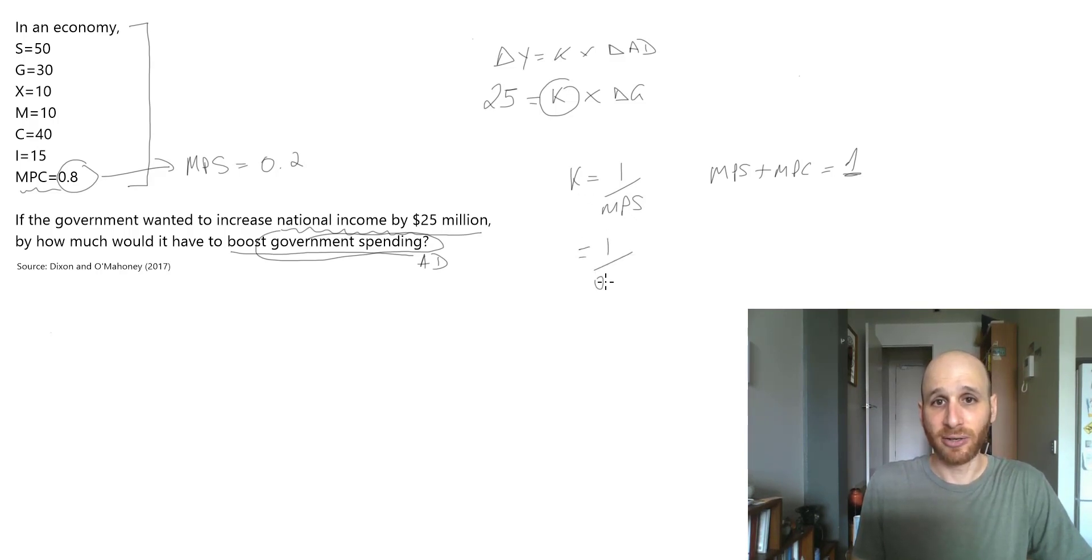So here I've got k will equal 1 over 0.2, so k will equal 5. Therefore, I know that 25 will equal 5 times the change in g. This is very basic mathematics here, so therefore g will have to equal 5 million dollars. And that is our answer to this particular question.